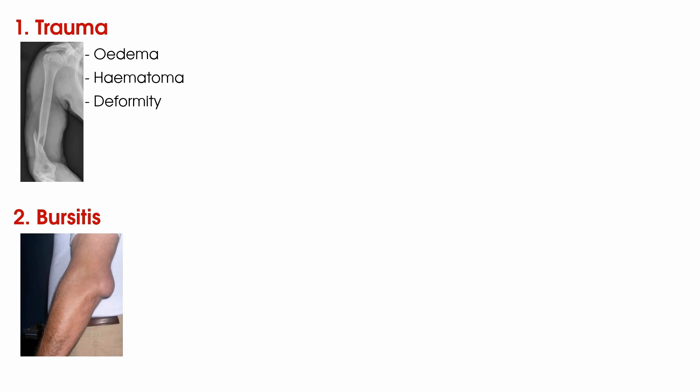Number two is bursitis, which put simply is inflammation of a bursa. Some bursae are more easily seen when they are inflamed. For instance, olecranon bursitis or student's elbow can be easily visualised as the bursa is right beneath the subcutaneous layer of the skin. Others are not so easily visualised due to their anatomy — for instance, subacromial bursitis, where the bursa lies in a relatively deep position underneath the acromion.